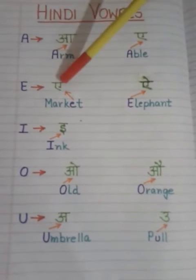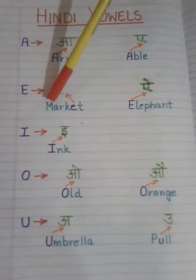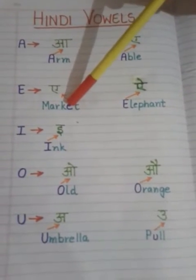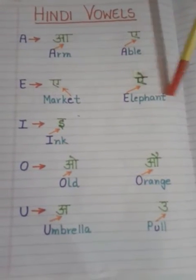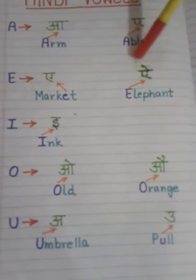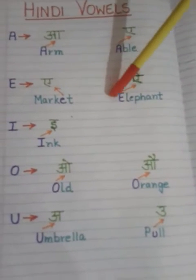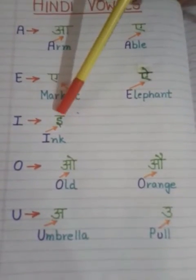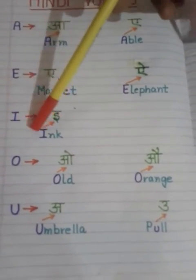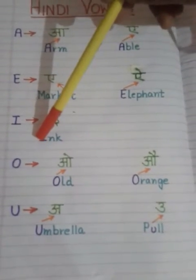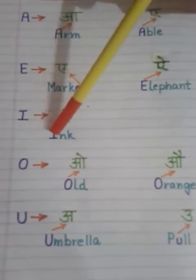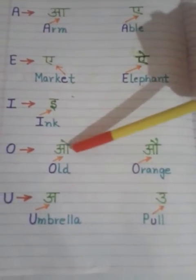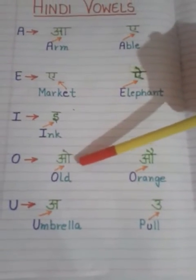Now how will you recognize these sounds since you don't know Hindi yet? I have given you English words to help. For example, the word 'market' — the 'a' sound here is the short 'a'. The word 'elephant' — the 'a' sound here is the other 'a' in Hindi. You can also use this for the word meaning 'hell' in Hindi. For the small 'e' sound in Hindi, you can use the word 'ink' — the 'i' sound in 'ink' helps you utter this letter.